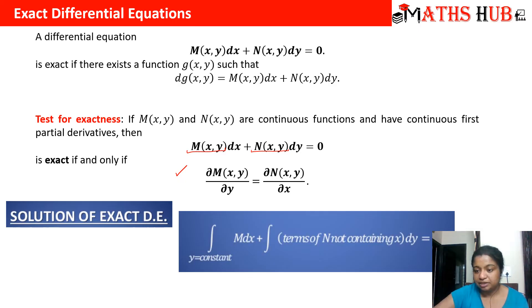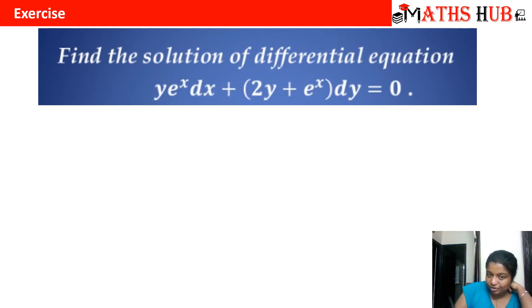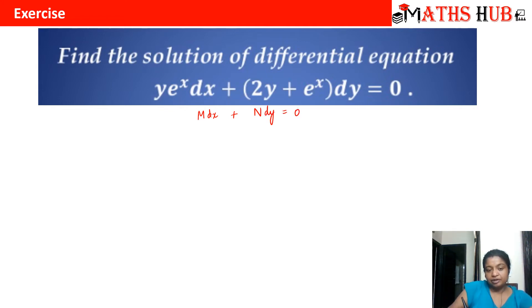Now let us try to understand this with the help of an example. We need to find the solution of the differential equation: y·e^x dx + (2y + e^x) dy = 0. Comparing it with the standard equation M dx + N dy = 0, we find that M = y·e^x and N = 2y + e^x.